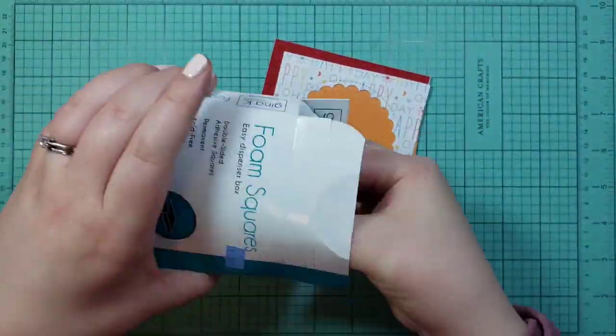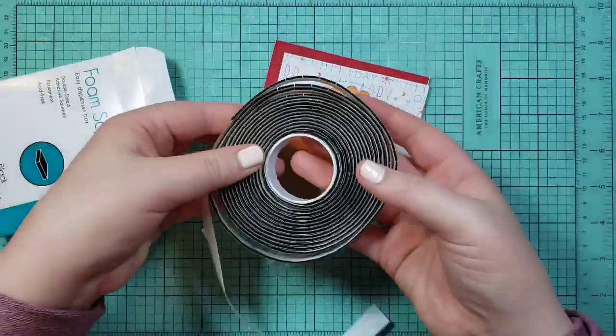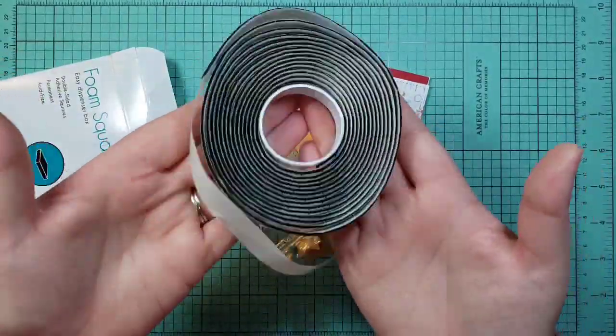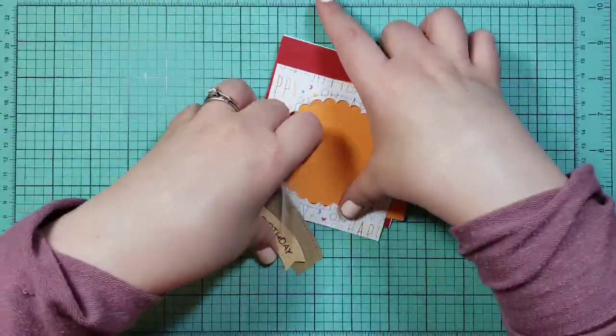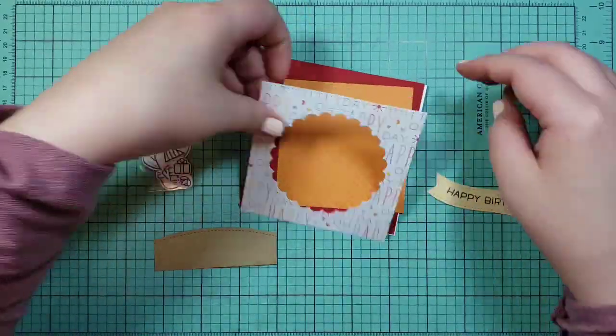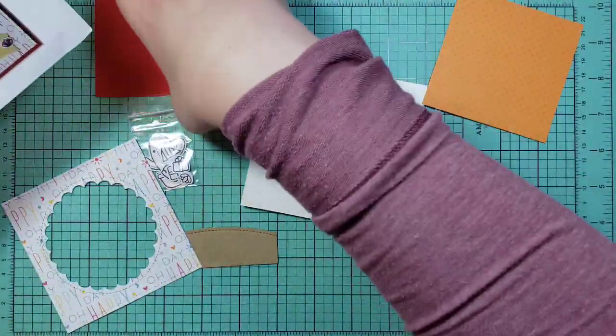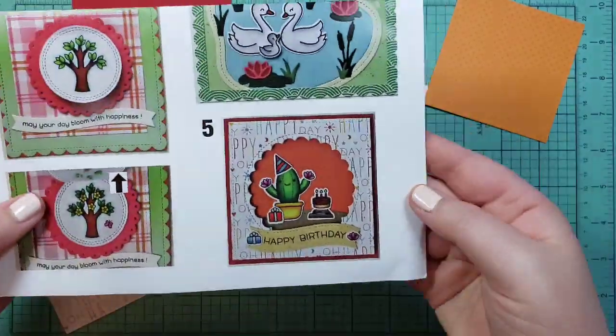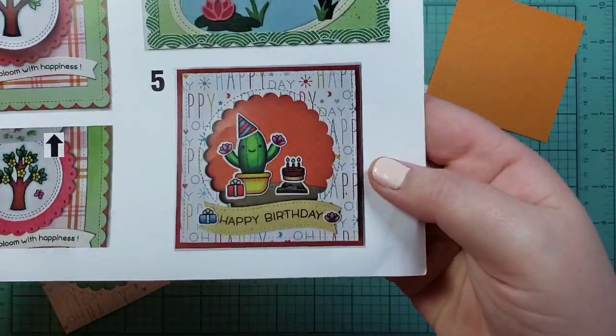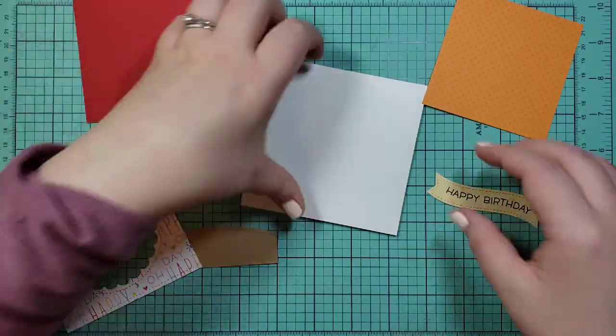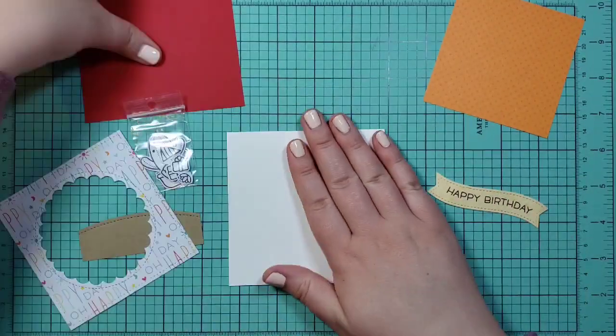They also included these foam squares which are really cute and they're black, so they help with the shading underneath stuff so you don't see the white foam in between your layers. I'm just going to give you a view on that and then I'm going to set it in front of me so I can follow it.